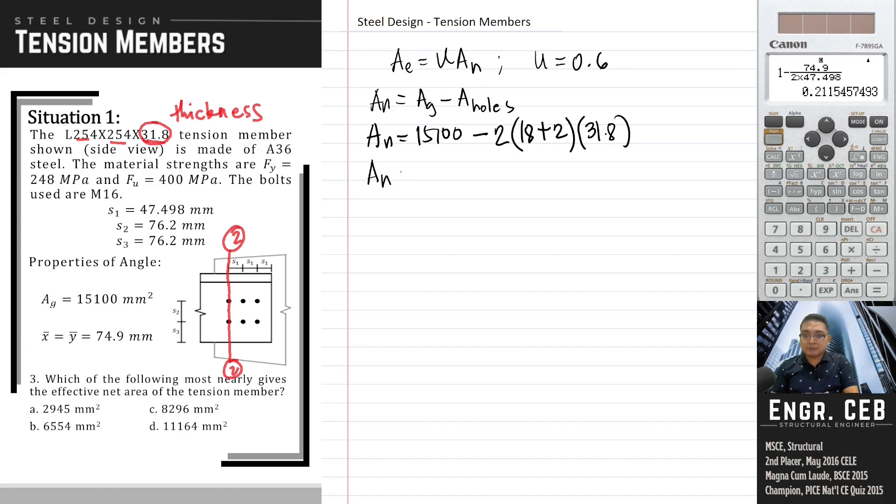Our net area becomes 13,828 millimeters squared. So after getting the net area, we can now compute for the effective net area. And that is equal to U times A_N. So we have 0.6 times 13,828. 8296.8. So therefore, the effective net area is 8296.8. And that is letter C.